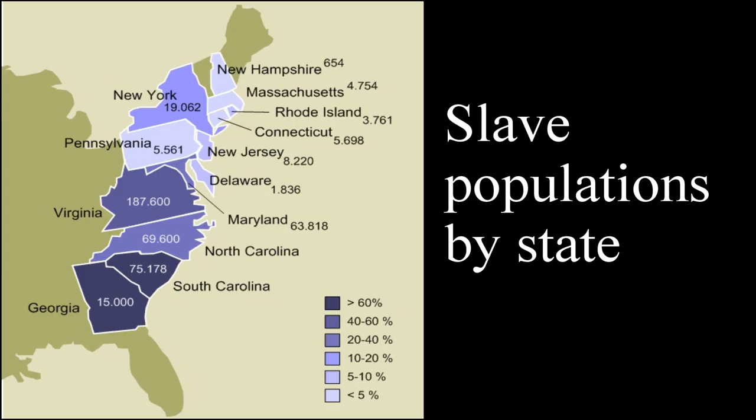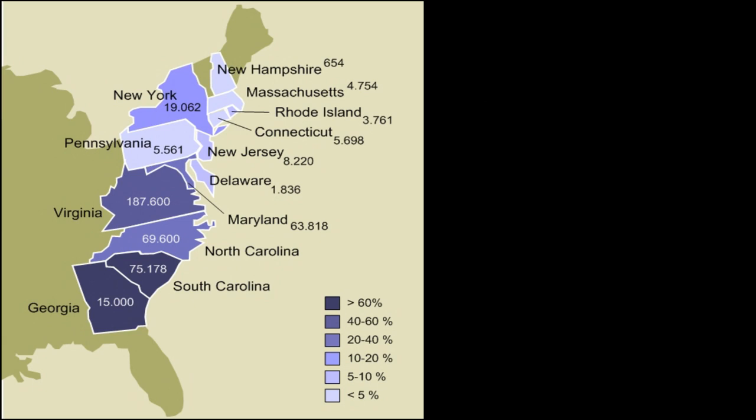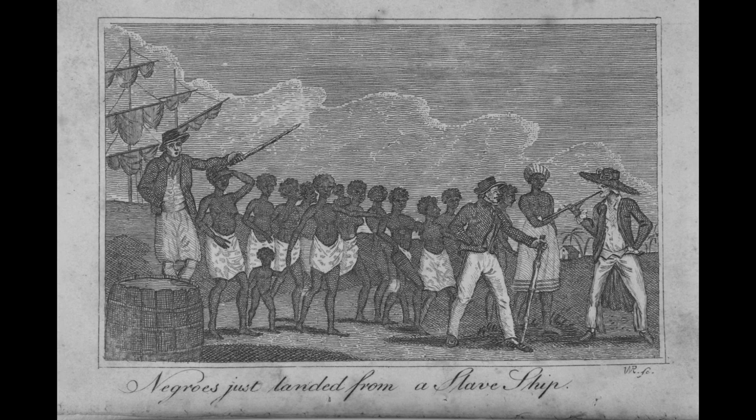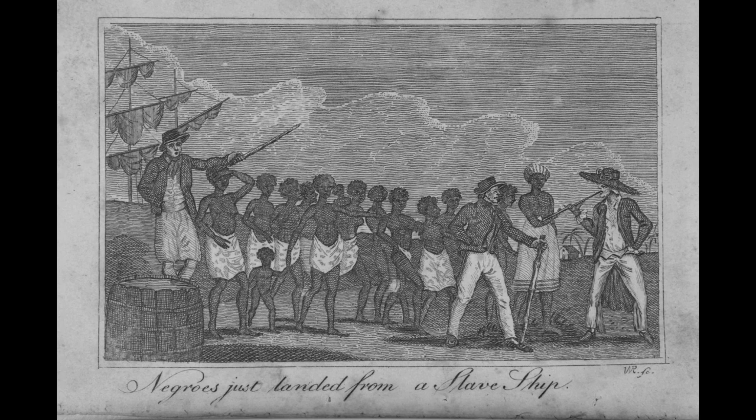Another compromise was the so-called Dirty Compromise, between the anti-slavery states of New England and the pro-slavery Deep South, which determined that the importation of slaves would be halted after a twenty-year grace period.